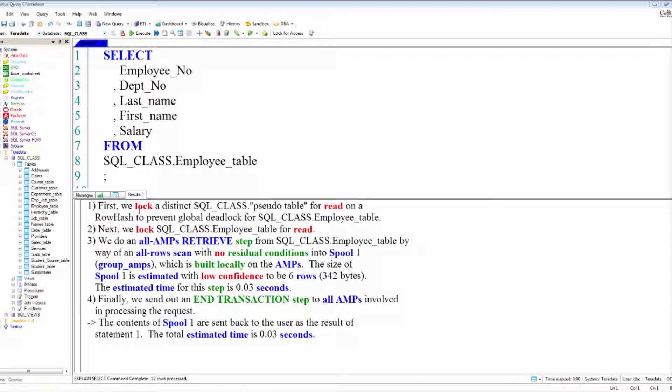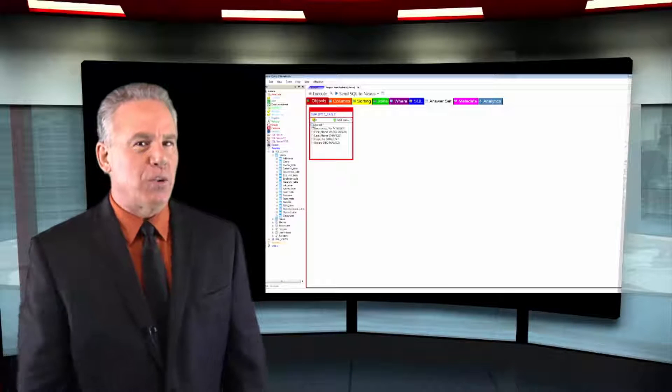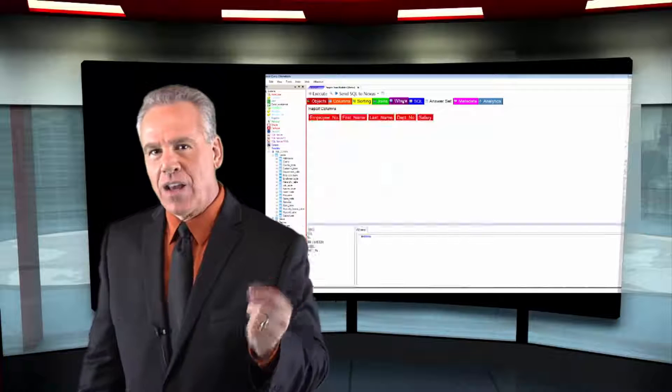This chapter was all about locking and one of the things that probably surprised you was the fact that you're placed in a pseudo table and that's the queue to access a table. One thing I want you to understand about that, if you use the primary index in the SQL WHERE clause, that is a single AMP retrieve.